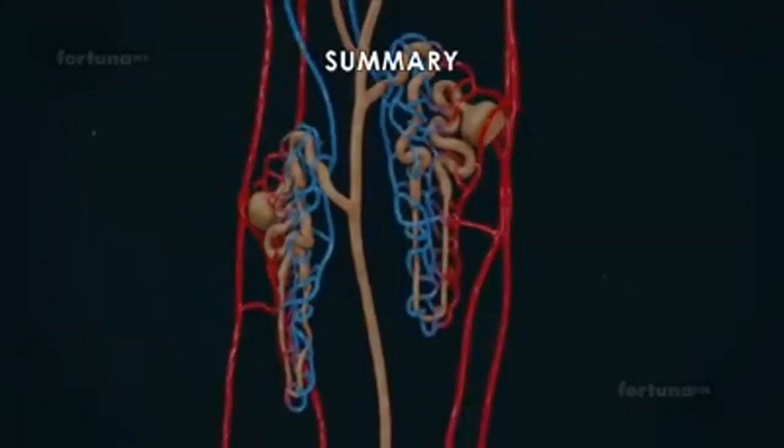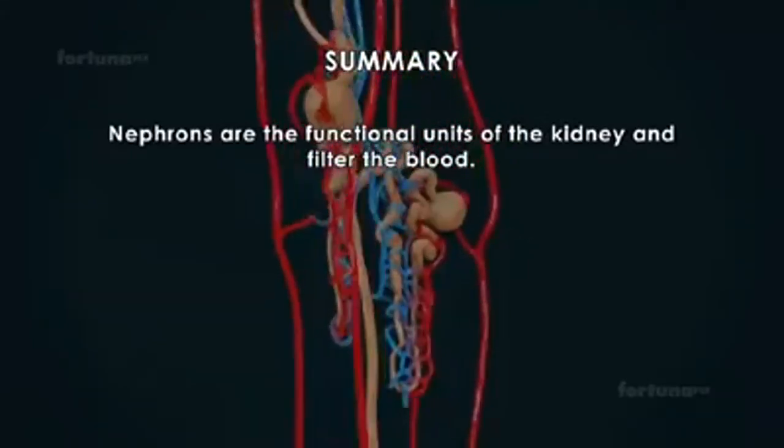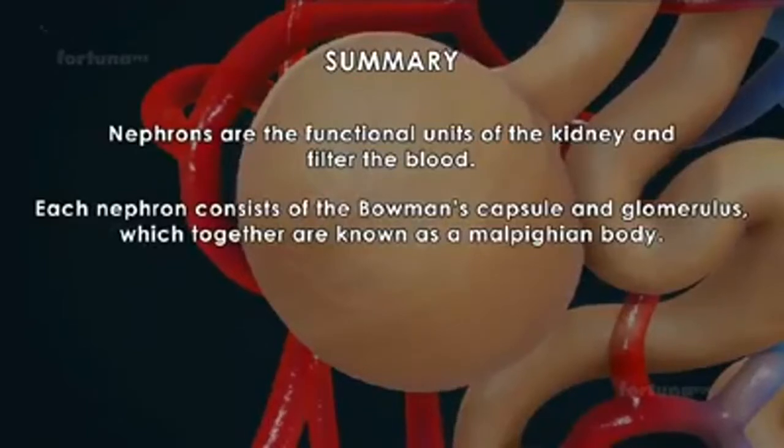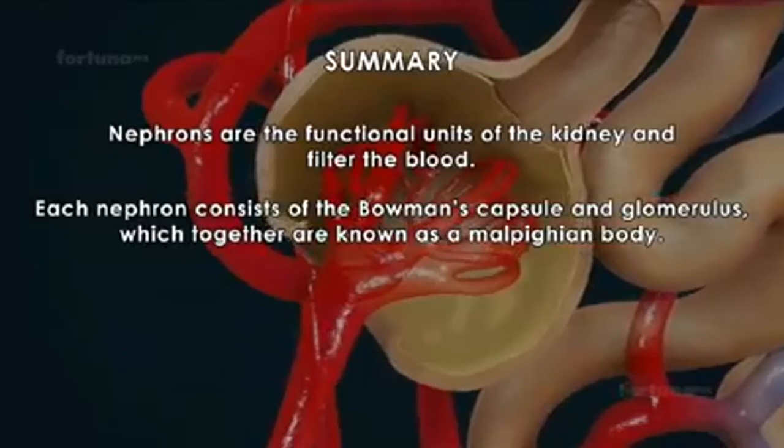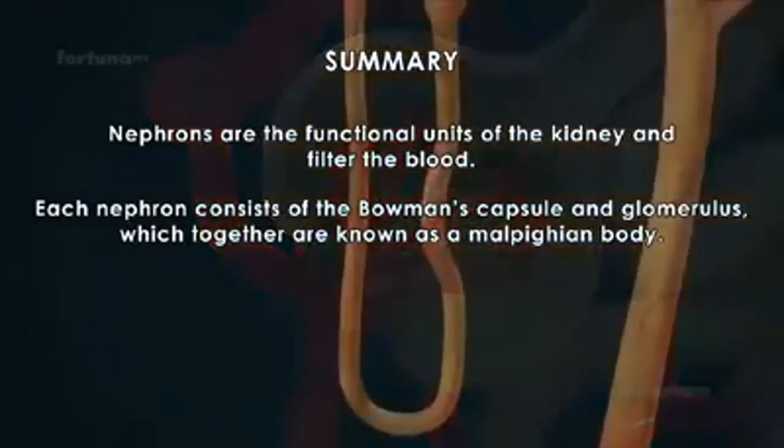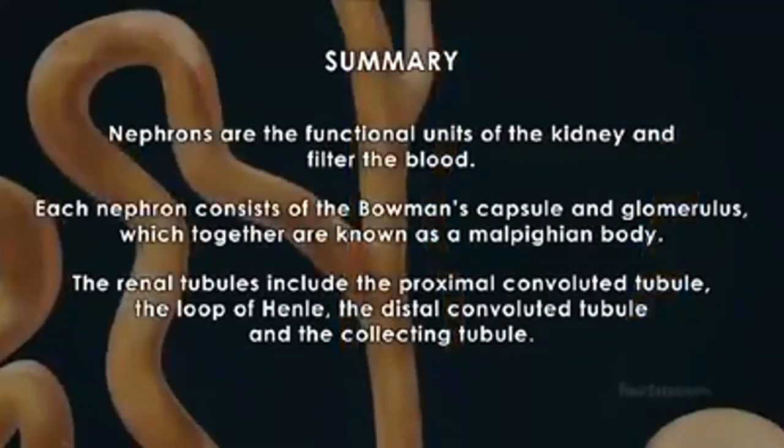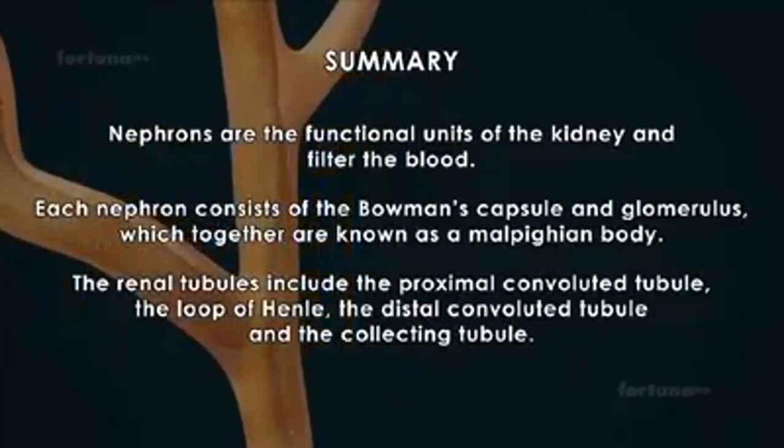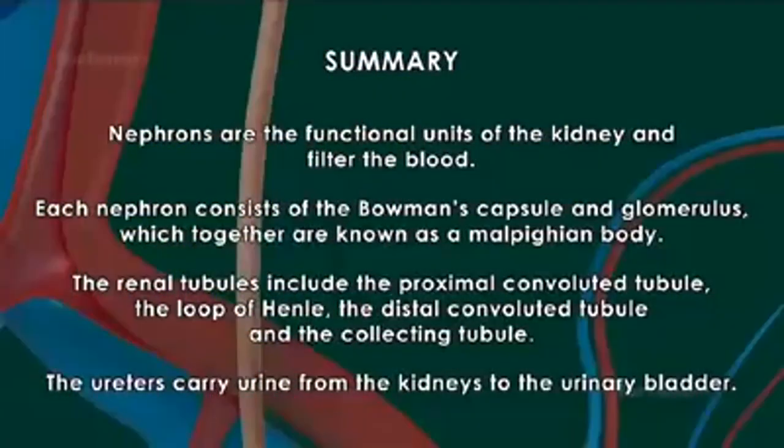Summary: Nephrons are the functional units of the kidney and filter the blood. Each nephron consists of the Bowman's capsule and glomerulus, which together are known as Malpighian body. The renal tubules include the proximal convoluted tubule, the loop of Henle, the distal convoluted tubule, and the collecting tubule. The ureters carry urine from the kidneys to the urinary bladder.